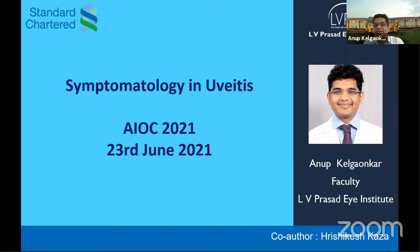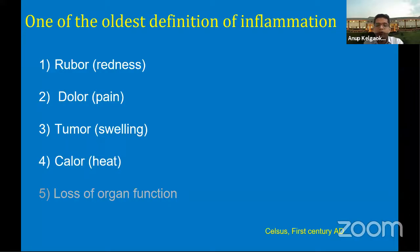When a patient of uveitis comes to a clinic, the first and most important thing is to talk with him and try to know the symptoms. This could not have been described better than Celsus, who described this in the first century. This comes as the oldest definition of inflammation, described in four Latin words: ruber, dolor, tumor, and calor. How aptly this refers to uveitis — redness is the very name of the disease.